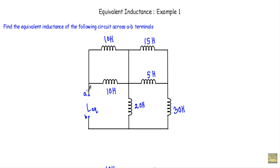Calculation of equivalent inductance of a circuit is more or less similar to the calculation of equivalent resistance of a resistive network. Therefore I will use the point method to calculate the equivalent resistance of the circuit. This is our point A, and this will also be point A.